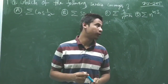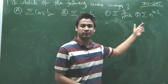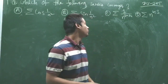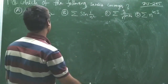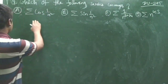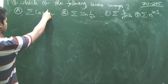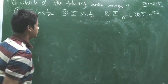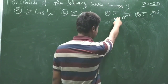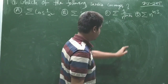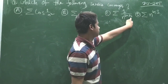Hello everyone. From Delhi University 2015, the question is: which of the following series converges? The first one is cos(1/n²), the second is sin(1/n²), the third is 1/n^(1 + 1/n), and the fourth is n^(cos 3).